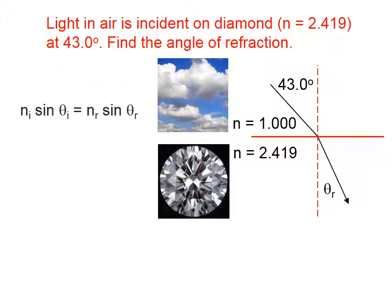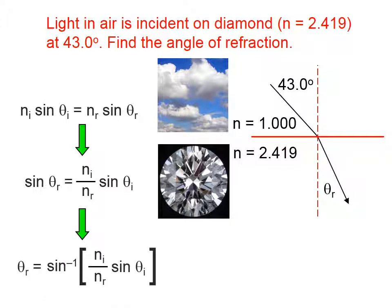So let's use Snell's law. We need to solve this equation for theta sub r. To do that, I'm first going to divide both sides by n sub r. Then, we don't want the sine of theta sub r, we want theta sub r. So we need to take the inverse sine of both sides in this fashion.